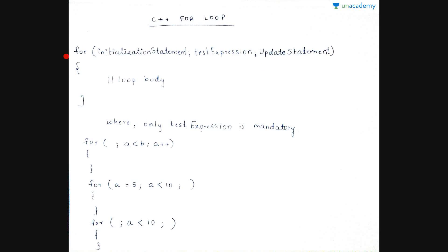The syntax of for loop is: initialization statement, test expression, and update statement. The initialization expression is where you initialize a variable, you test that variable with some condition, and then you update that variable. The loop body is executed n number of times — possibly 0 times, 1 time, and so on — as long as the test expression evaluates to true.